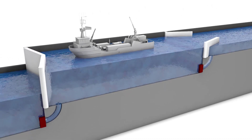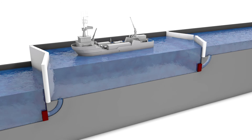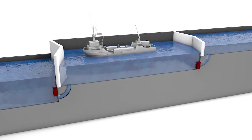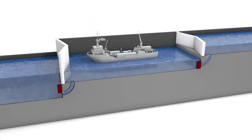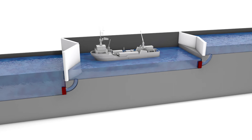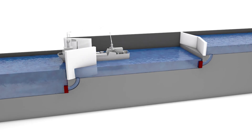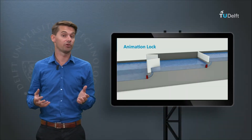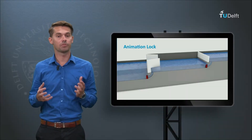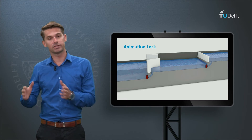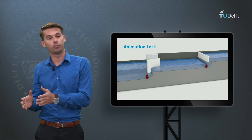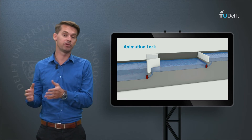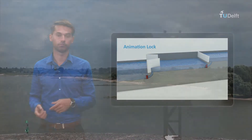Once a vessel is inside the chamber, the gates are closed and water levels are adjusted to the upper or lower part of the waterways. In the middle and upper Rhine, locks can be found adjacent to dams, weirs, and junctions between rivers and connecting waterways.